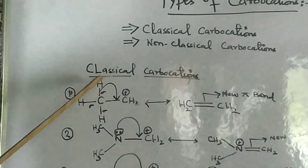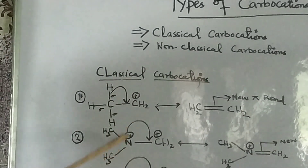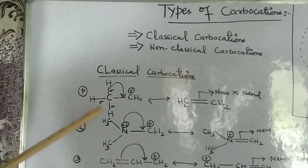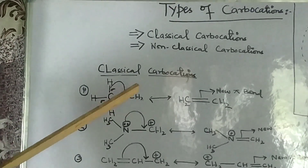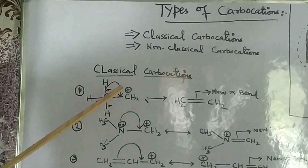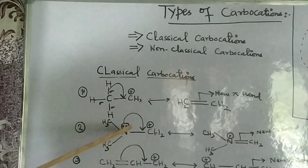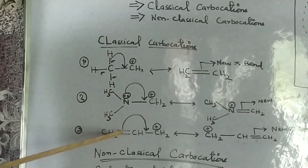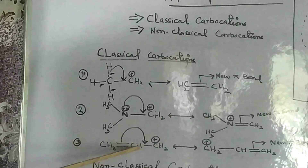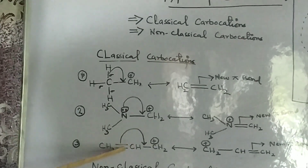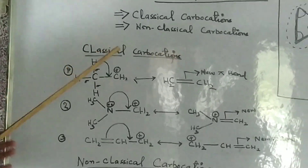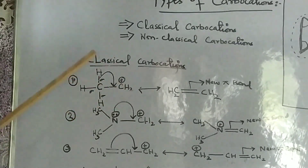First of all, we will talk about classical carbocations. I have shown some examples here. Classical carbocations are those carbocations in which the carbon bearing positive charge is stabilized either by the presence of sigma electrons in the adjacent position, or by the presence of a lone pair of electrons in the adjacent position, or by the presence of pi electrons in the adjacent position to the carbon bearing positive charge.